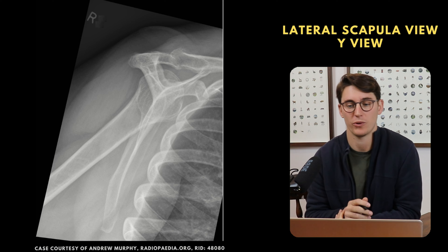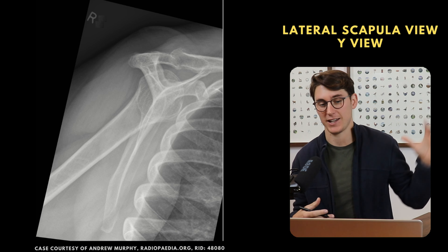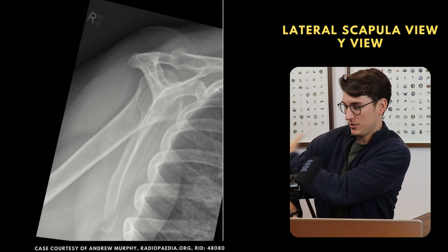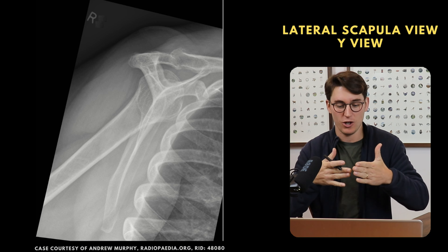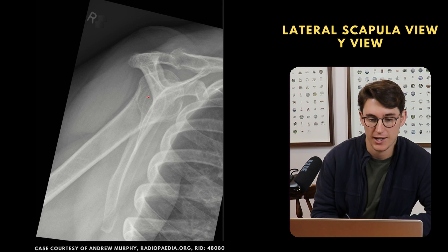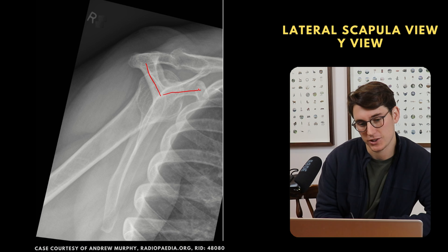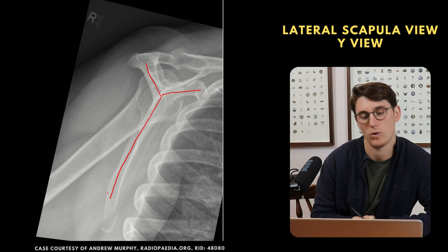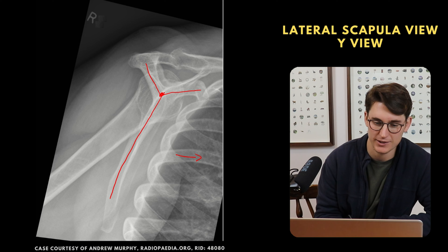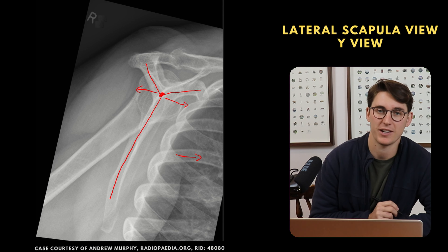Another view is called the Y view, or lateral scapular view. The patient faces the x-ray detector with the beam coming from behind, slightly extending the shoulder backwards so we're seeing the scapula end on — a completely orthogonal view to the AP. The scapula spine and acromion, the coracoid process anteriorly, and the blade of the scapula form a Y formation. The humeral head should sit directly in the center of this Y. If the humeral head is posterior to the Y, that's a posterior dislocation; if anterior, an anterior dislocation.